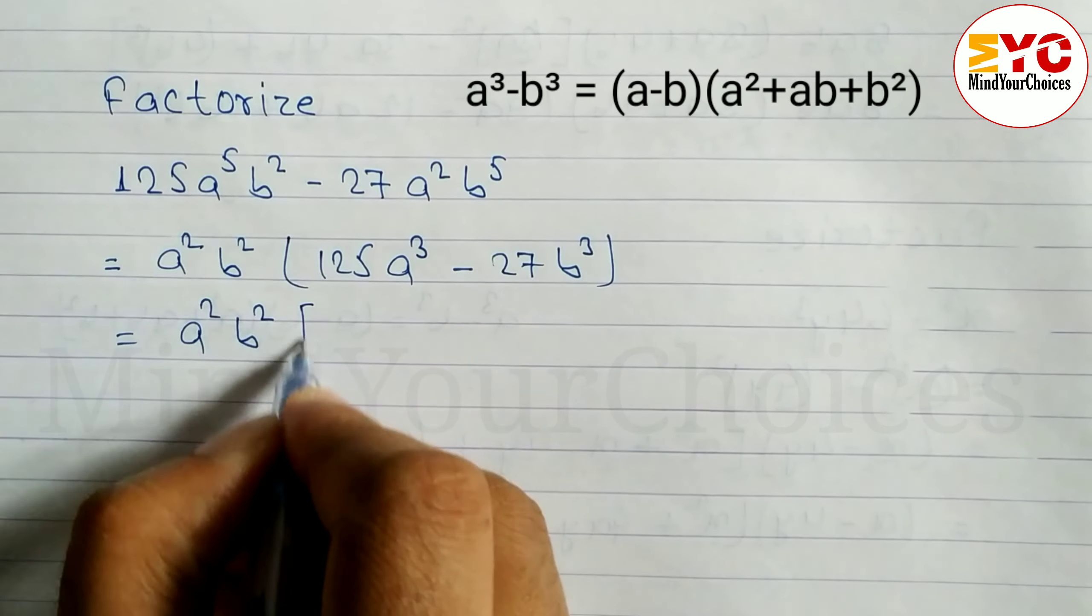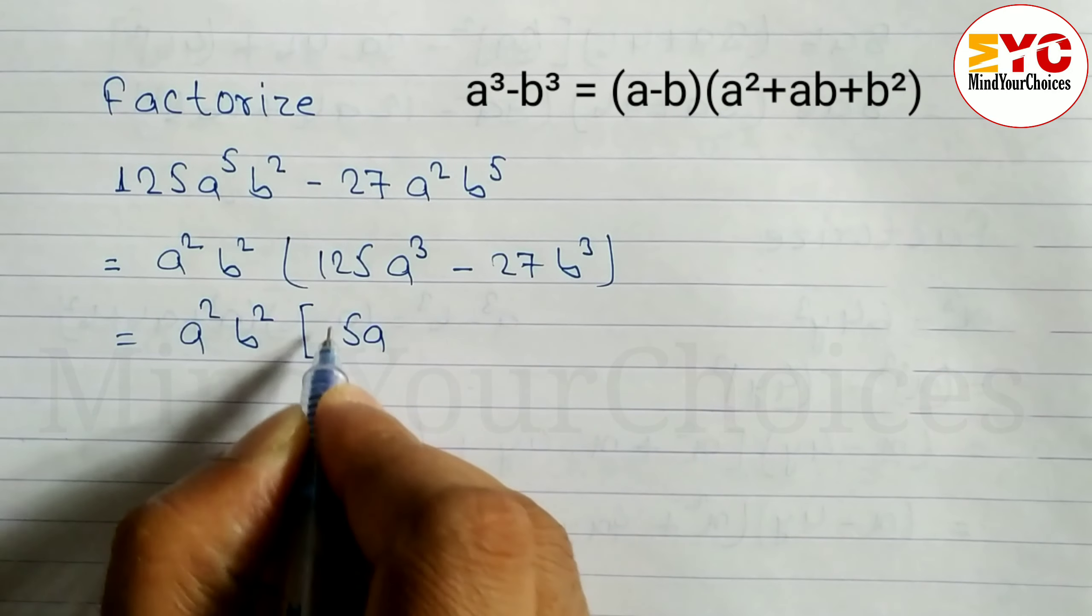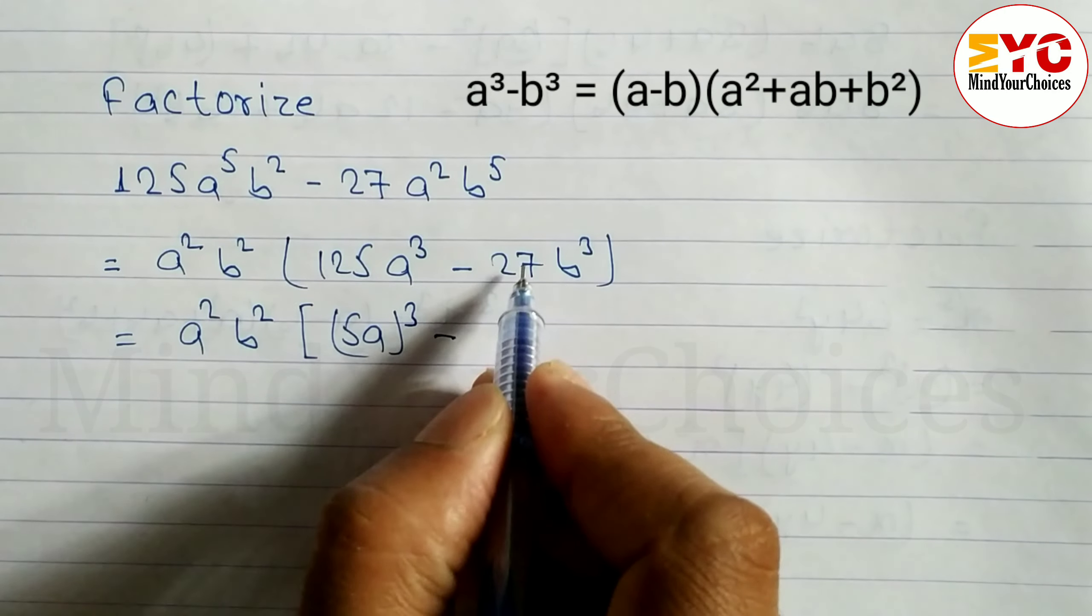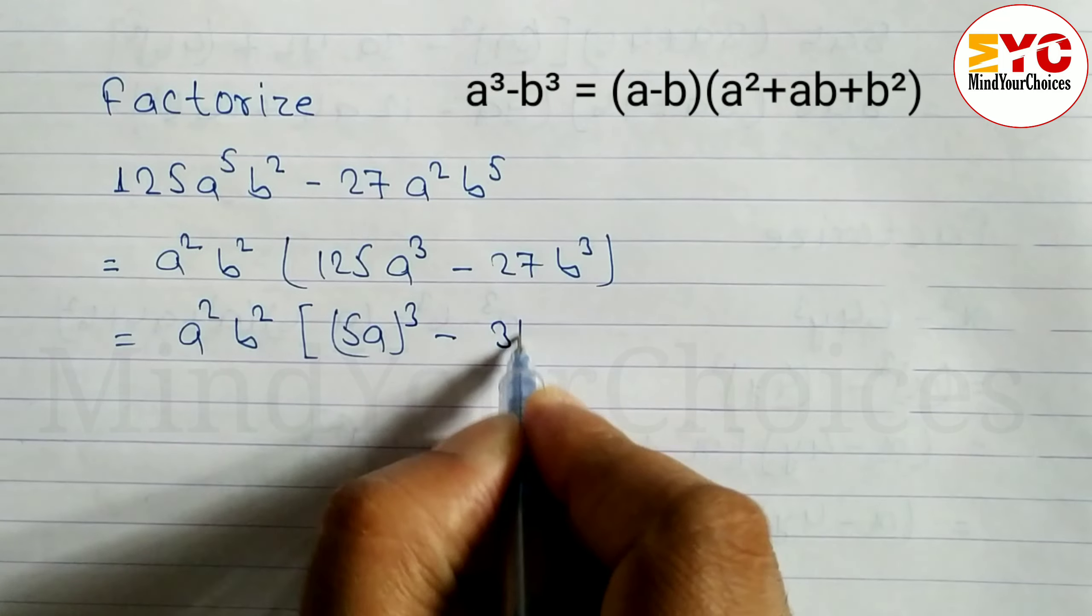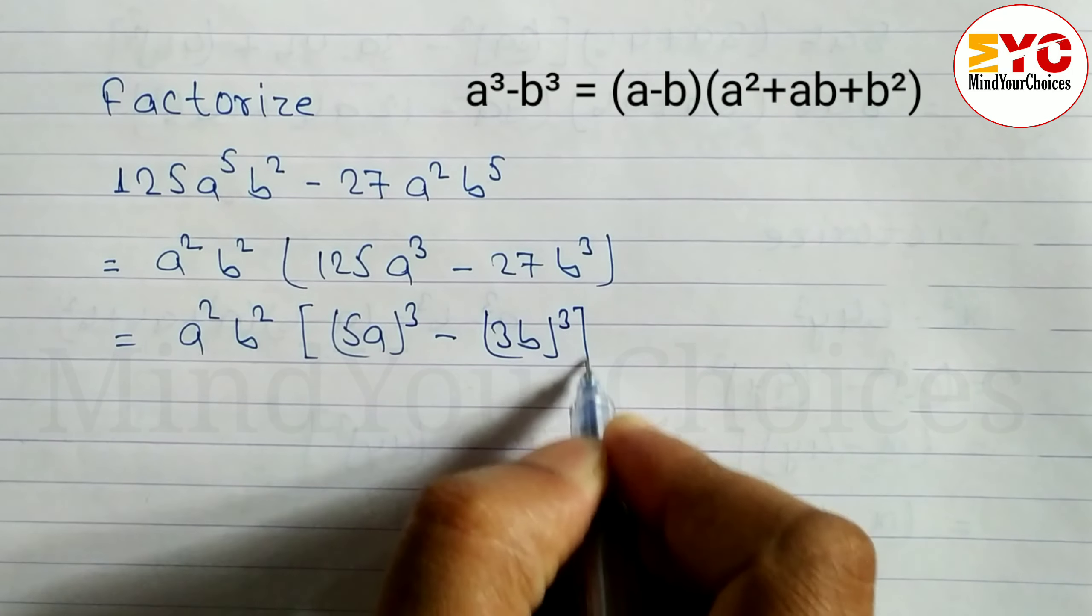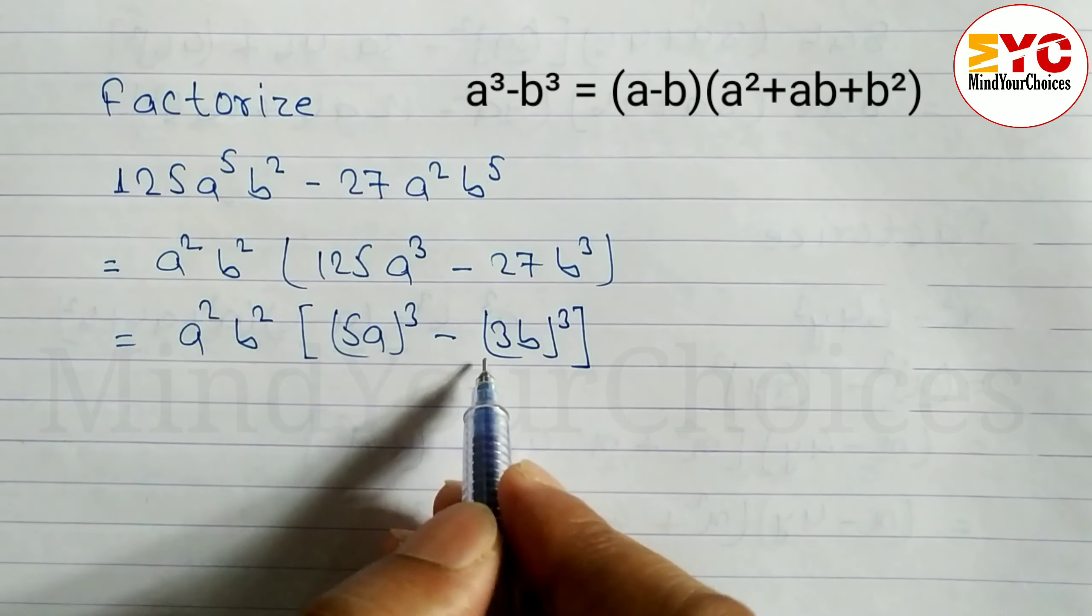So we can write (5a)³ minus - the cube root of 27 is 3, so we can write (3b)³. Now this is in the form of a³ - b³.